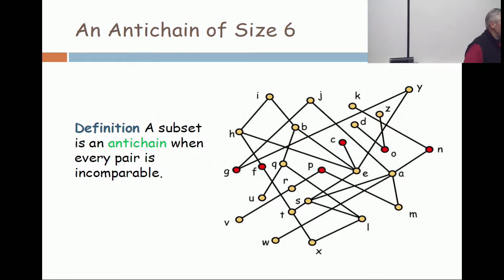What is six choose two? Six times five over two is thirty over two is fifteen. There are fifteen facts to check.